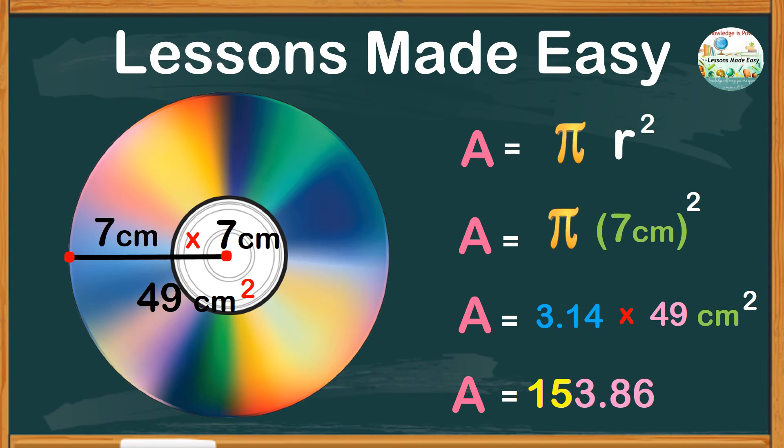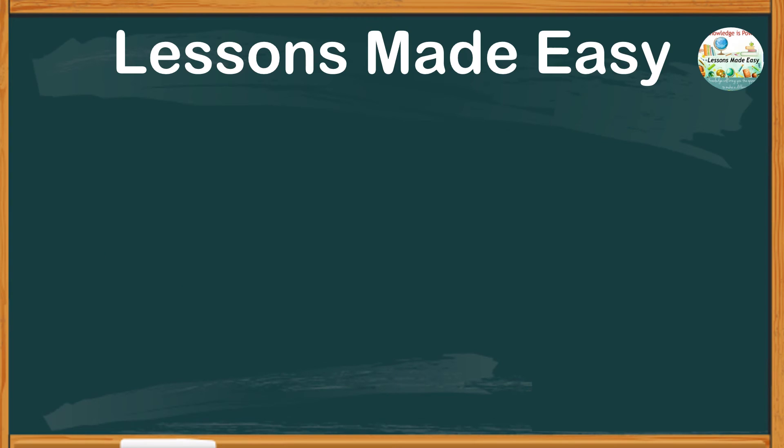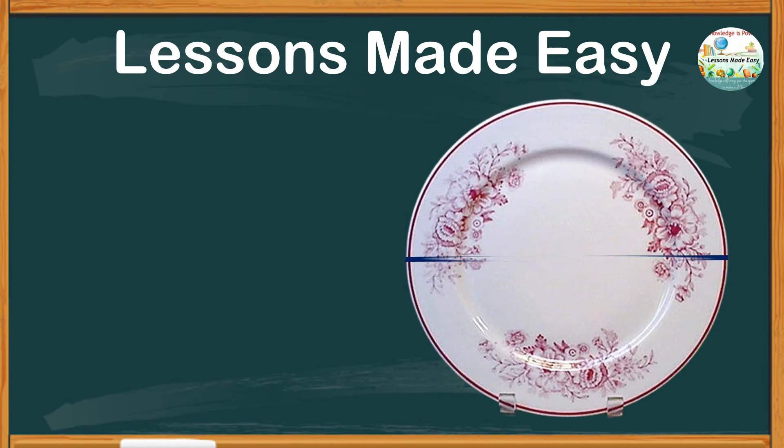But what if instead of the radius, the given measurement is the diameter? Like this one: find the area of a plate with a diameter of 26 centimeters. So just the same formula: area equals pi r squared. Since we need the radius but the given is the diameter, we will only take half of this number.